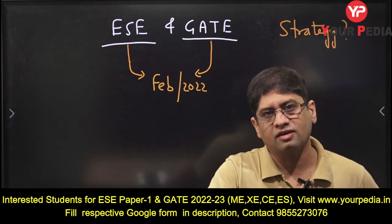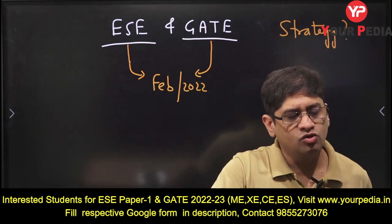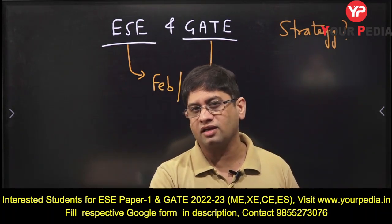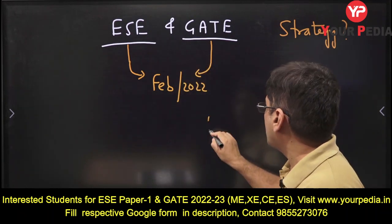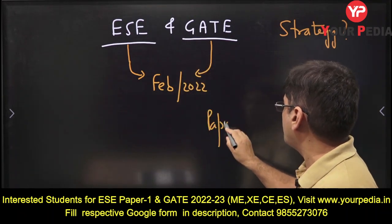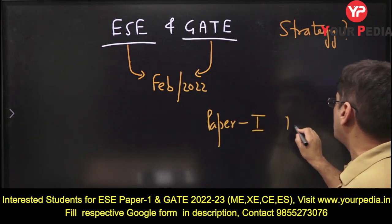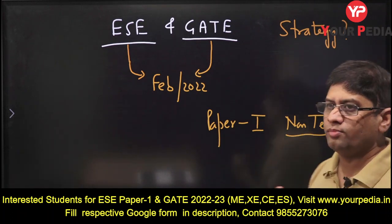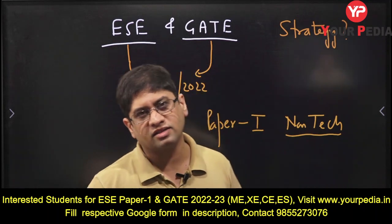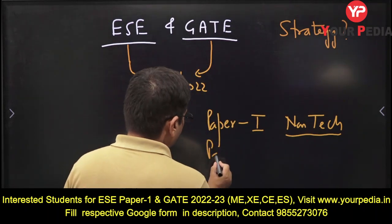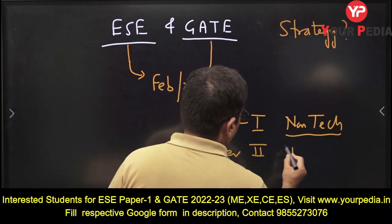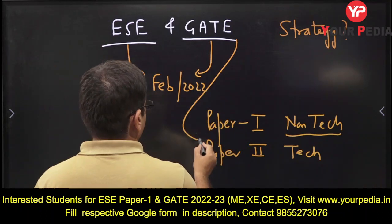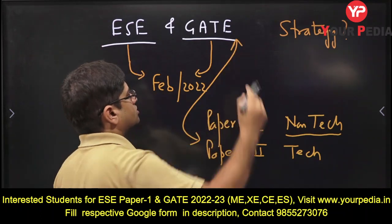Engineering Services preliminary has a technical and non-technical component — Paper 1 and Paper 2 — while GATE is totally technical. So for GATE, all you have to do is make a technical preparation. Engineering Services Paper 1 is basically a non-technical paper, and that preparation is not going to help you in GATE.